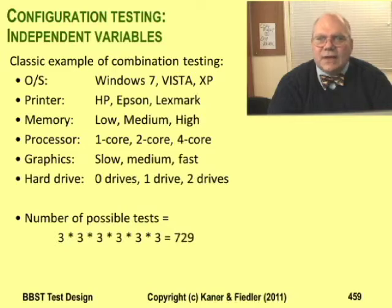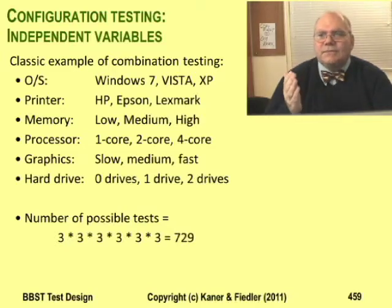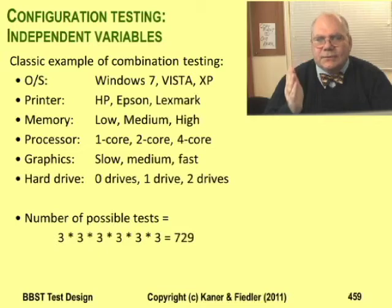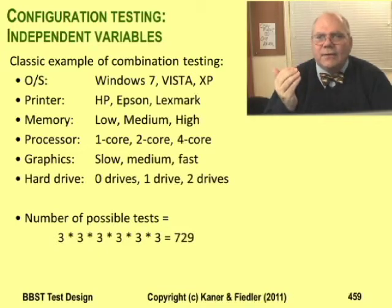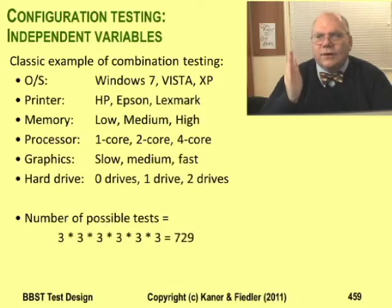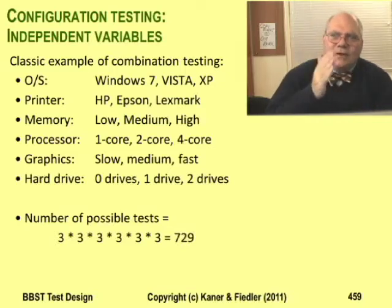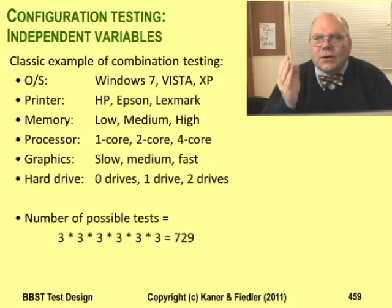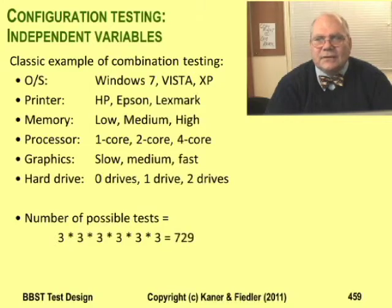Every test includes a setting for every variable. So with six variables, all n-tuples means all six-tuples. The example includes three values for each variable, so all six-tuples would include 3×3×3×3×3×3 — 729 possible combinations. That's too many tests to run.